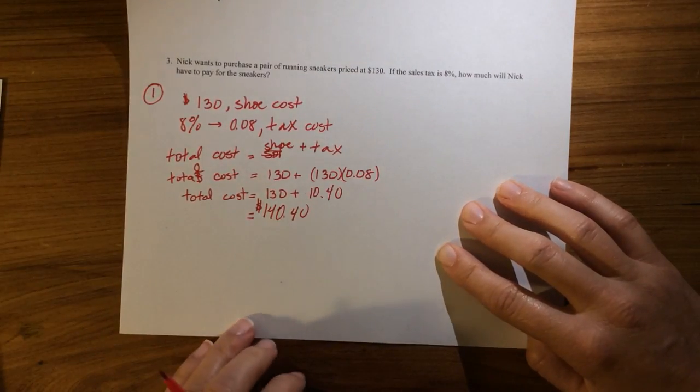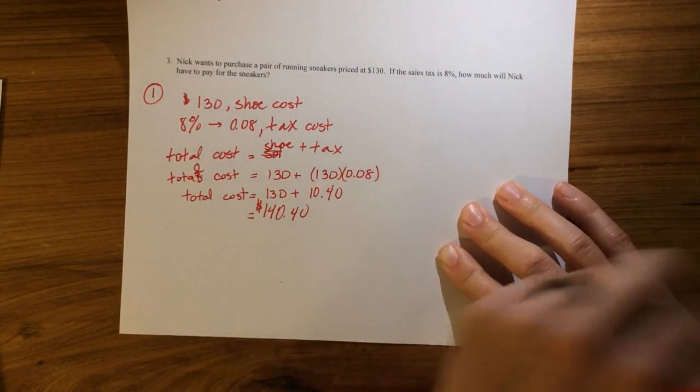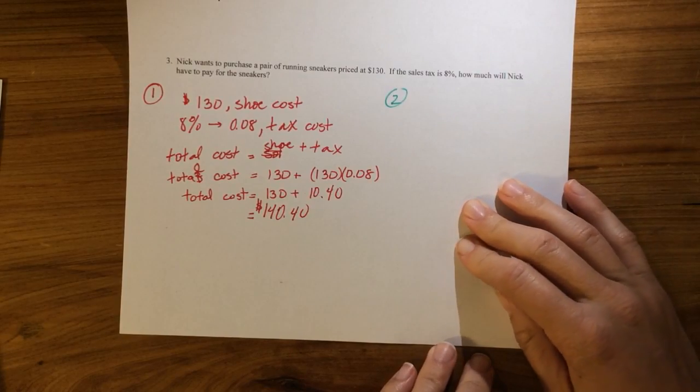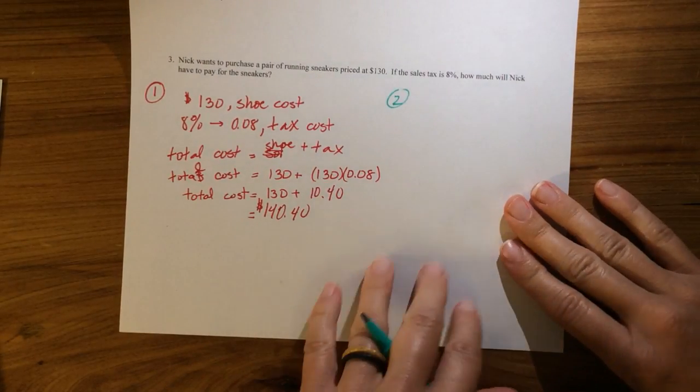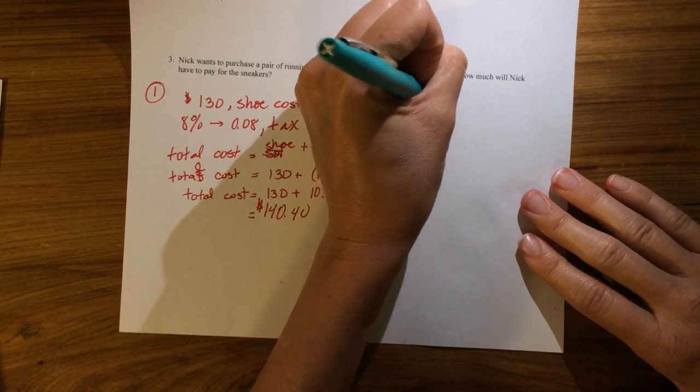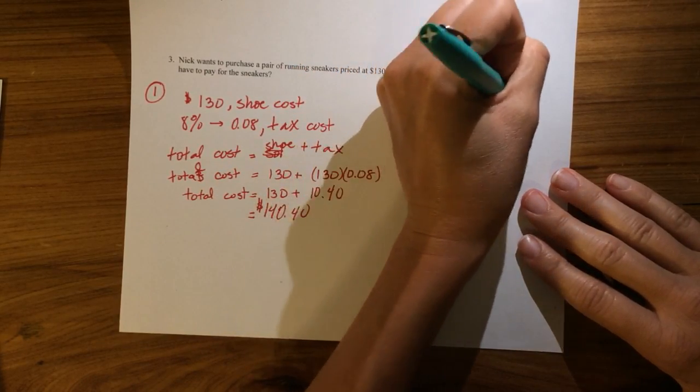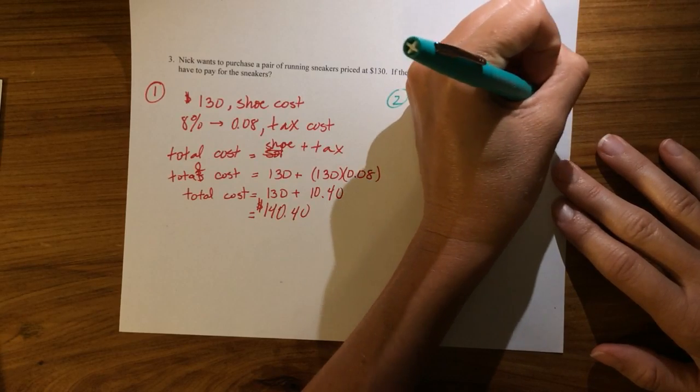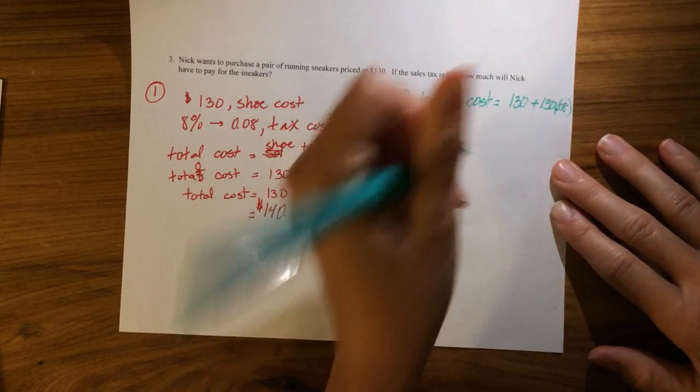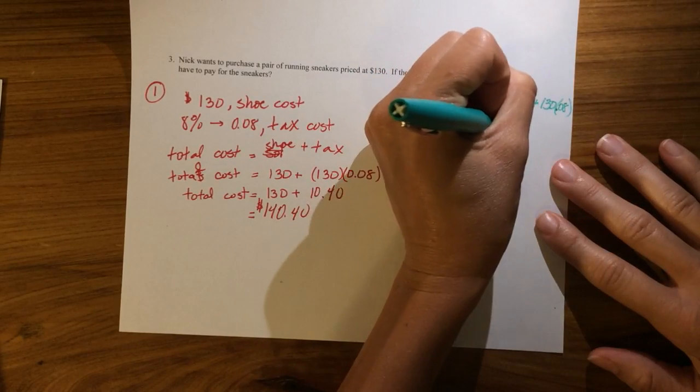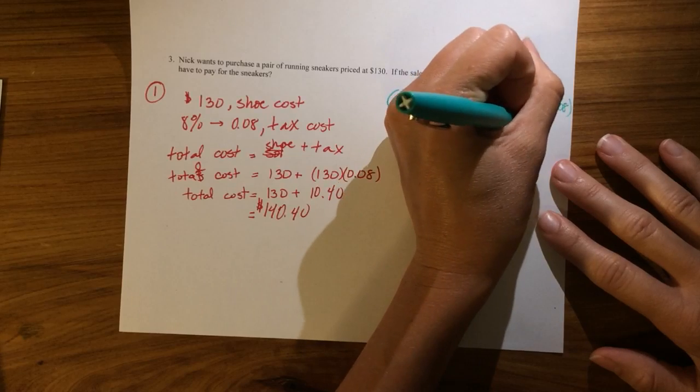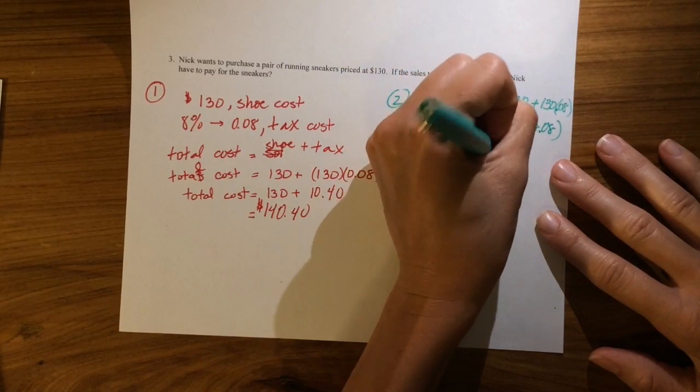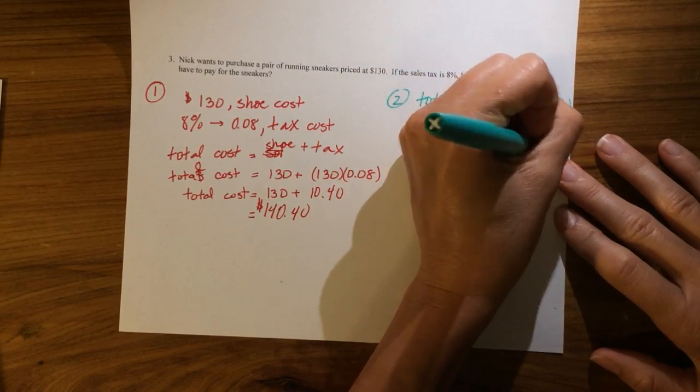The second way to do it, let me change colors. The second way to do it is to recognize that our total cost is still the 130 plus the 130 times the tax, 0.08. Here if I factor out the 130, this is 130 times 1 plus 0.08, which is 130 times 1.08.